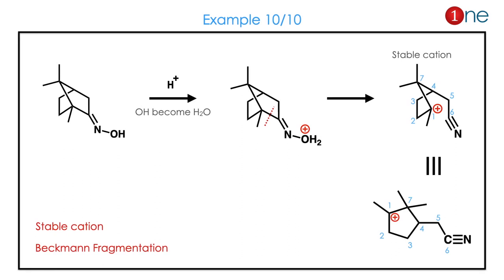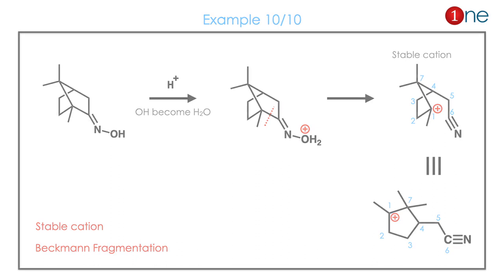The final example demonstrates Beckmann fragmentation. Here the trans group is a rigid carbon that, when broken, forms a stable cation. Redrawing nicely, the charge is quenched to form a cyanide. So a stable cation always leads to Beckmann fragmentation rather than rearrangement.